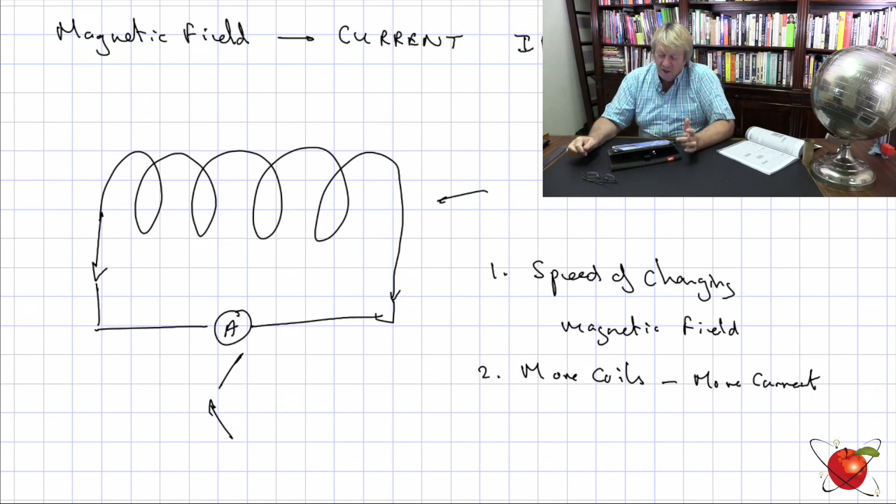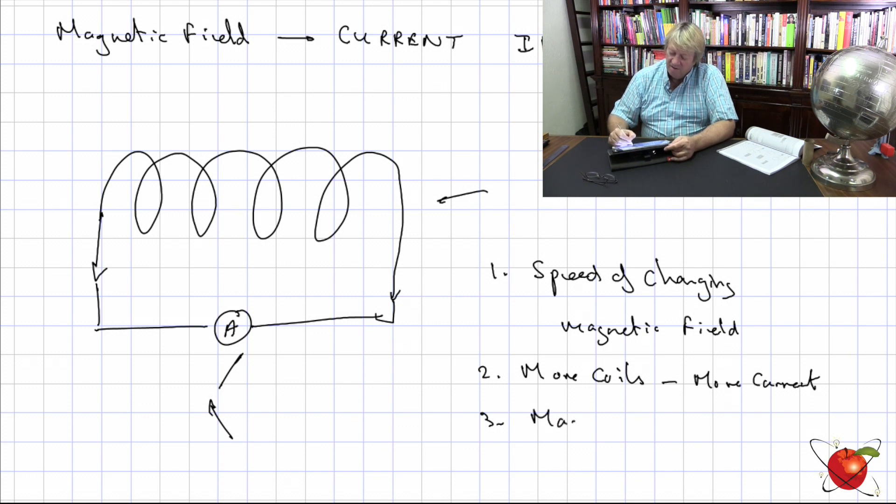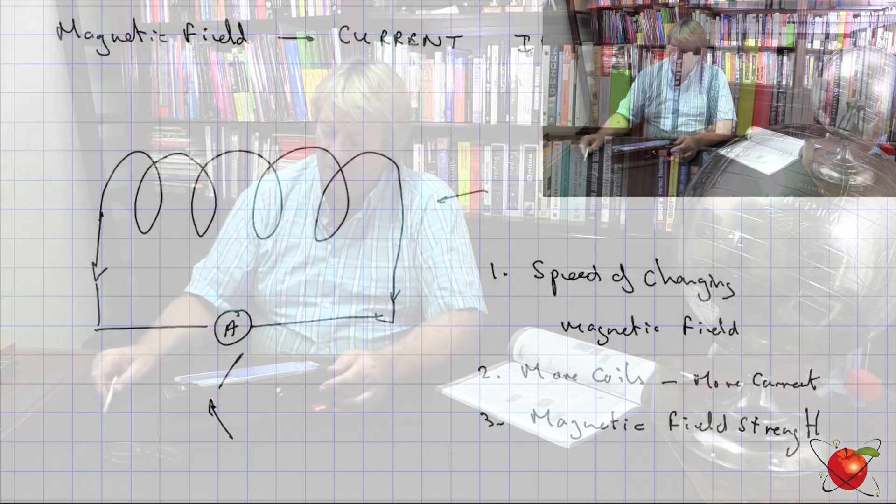And, the last one is obviously, it's linked to the magnets themselves. Magnetic field strength. Obviously, the stronger the magnet, if this is a very strong magnet, and I'm moving it in, it's going to have an effect on the current itself. So, those are the issues that are having an effect on the current. Is the speed that we change it, that's how fast that the conductor is cutting through the magnetic flux lines, the number of coils, and the magnetic field strength itself. Those are the things that are influencing the current that we're going to be seeing in this solenoid of ours.